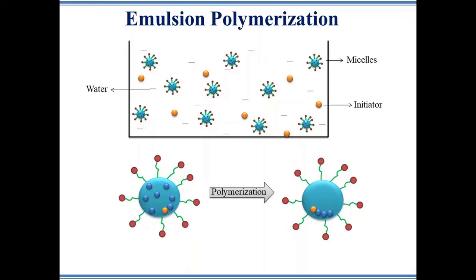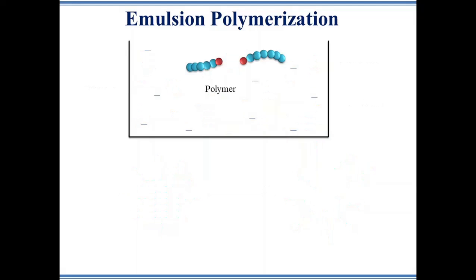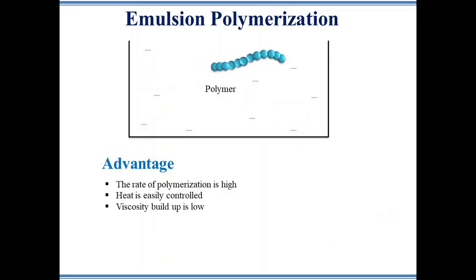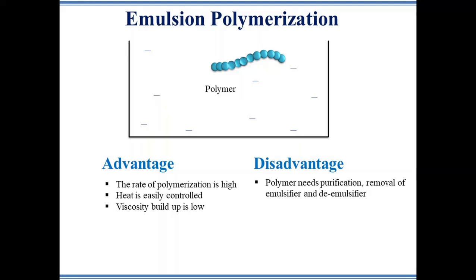In the propagation step, the monomers start combining and grow into a chain radical. Once all the monomer converts into polymer chain radical, a de-emulsifying agent is added which disperses the surfactant in water. Finally, the polymer chain radicals combine together and form a neutral polymer chain. The advantage of this method is that the rate of polymerization is very high, leading to high molecular weight polymers. The continuous phase water is an excellent conductor of heat so heat is easily controlled. Polymerization proceeds in micelles so viscosity of the system remains almost the same. The disadvantage is that the polymer needs purification through removal of emulsifier and de-emulsifier.